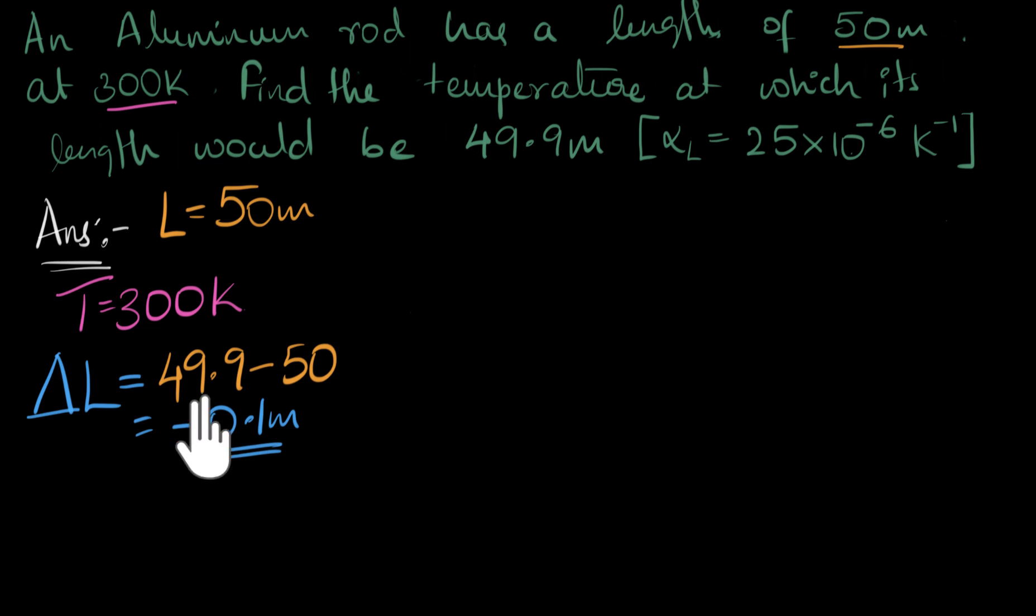The minus sign is just telling that we want the rod to shrink in size, that's all, nothing else. So we want the rod to shrink in size by 0.1 meter. The question now is to what temperature we should cool it down, right? Because we want to shrink.